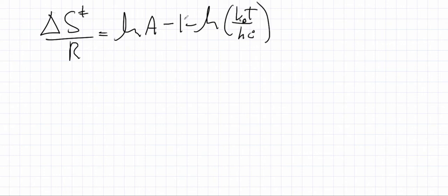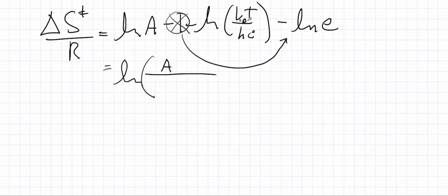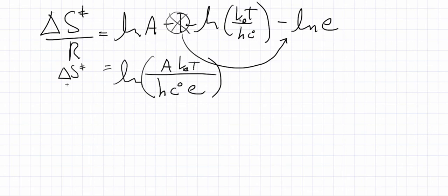Solving for entropy, we have delta S double dagger over R equals log of A minus 1 minus the log of kT over hc. The minus 1 can be written as minus log of e (2.718...), since log of e equals 1. This allows us to combine all the logarithms: delta S double dagger over R equals log of A times hc over kT times e.